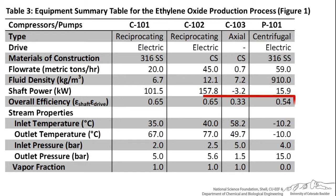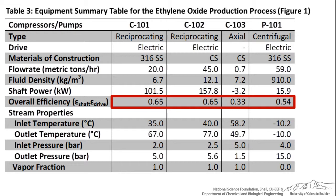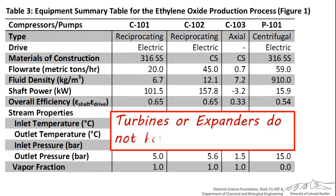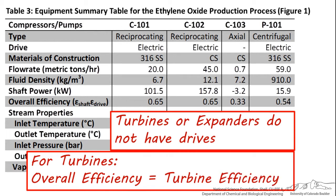Next is the overall efficiency, which for pumps and compressors is the shaft efficiency times the drive efficiency. Something important to keep in mind is that turbines do not have drives, because their job is to extract energy from the fluid. For turbines by themselves, the overall efficiency is equal to just the efficiency of the turbine. If this turbine were attached to a compressor or pump, we could calculate an overall efficiency combining both units, but if the turbine is by itself, we can only estimate the efficiency of that unit.